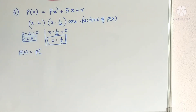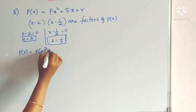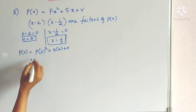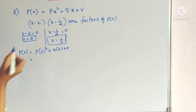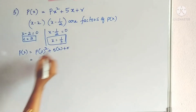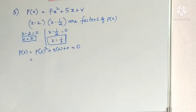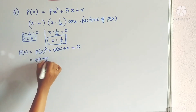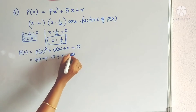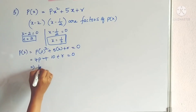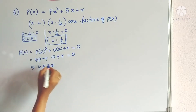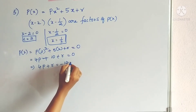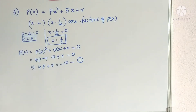Now we find p(2): substitute x = 2, giving p(2²) + 5(2) + r equals zero, since it is a factor and the remainder equals zero. So 4p + 10 + r = 0, which means 4p + r = −10. Let this be equation 1.